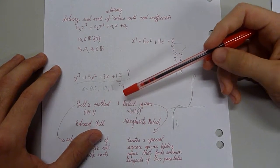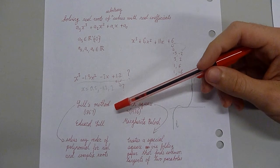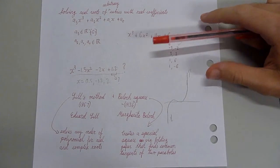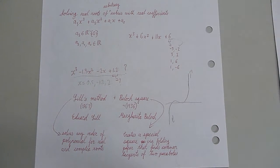So this is a combination of two methods. One is Lille's method, which is a visual method for solving roots of polynomials that apparently was largely forgotten, and then this cool thing called a Beloch square.